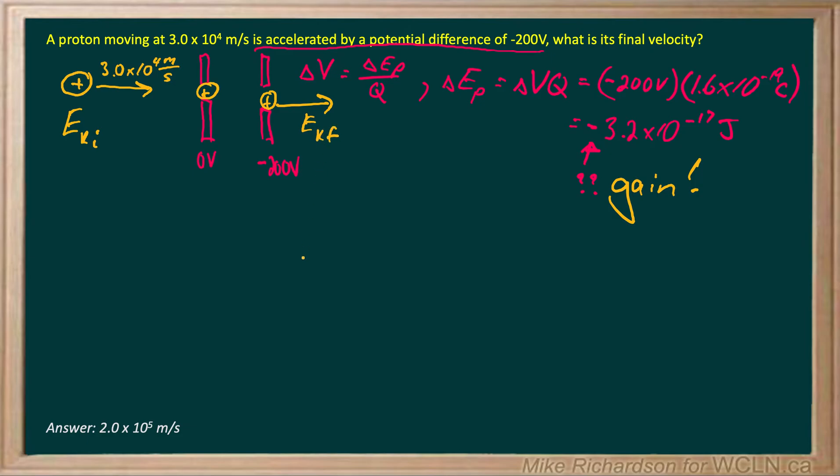And we want to determine that final velocity. So I started with kinetic energy, I gained some potential, and that's because it's accelerated through a potential difference. And I end with a final kinetic energy.